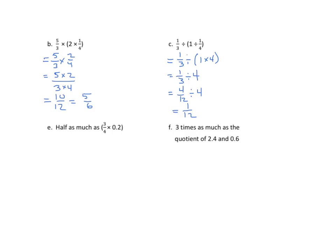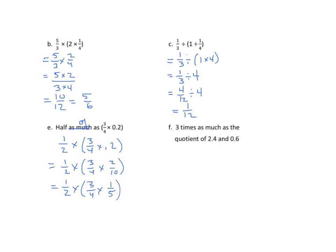The next two are in words, so first change them to a numerical expression, then work through the steps. 'Half as much as' is the same as 1/2 of 3/4 times 2/10. I'll work in fractions. Simplify 2/10 to 1/5 now: 1/2 times 3/4 times 1/5 equals 1/2 times 3/20 equals 3/40.